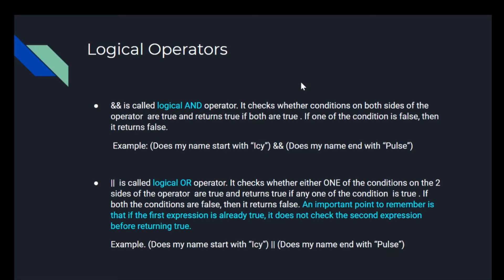An example of this is: does my name start with 'IC' AND does my name end with 'pulse'. The double pipe sign represents the logical OR operator. This checks whether one of the conditions on either side of the operator is true and returns true if any one condition is true. If both conditions are false, it returns false. An important point: if the first expression is already true, it does not check the second expression. For example: does my name start with 'IC' OR does my name end with 'pulse'.